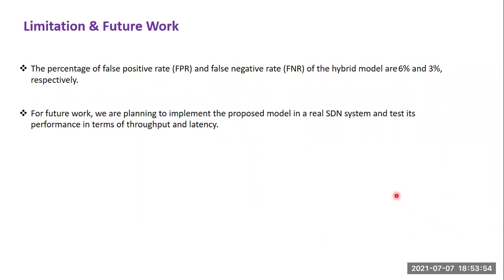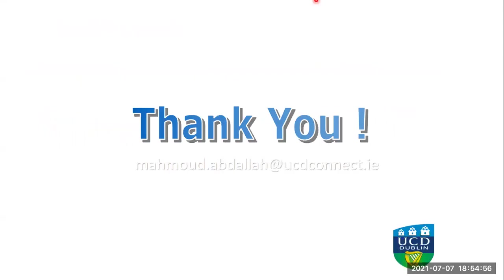The limitation of this work is that the percentage of false positives and false negatives is still relatively high, at 6% and 3% respectively. However, we are using supervised learning for anomaly detection to detect attacks never seen before — tested with traffic samples during testing that differ from those used during training. The false negative rate is still high for this reason, but compared to different unsupervised learning techniques, this model is still performing very well. For future work, I am planning to implement this model in a real SDN network and test its performance in terms of throughput and latency. Thank you very much.